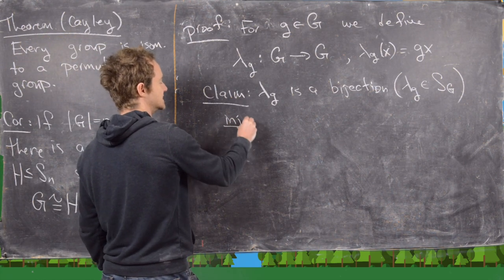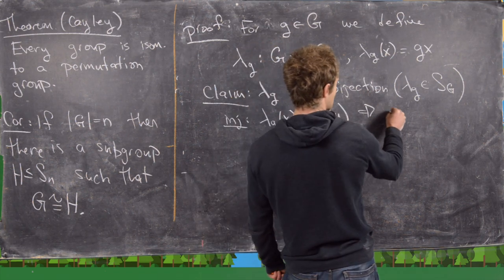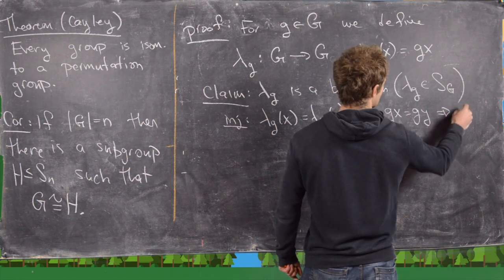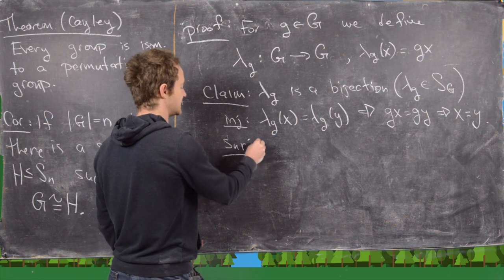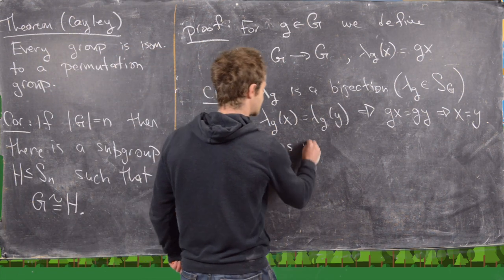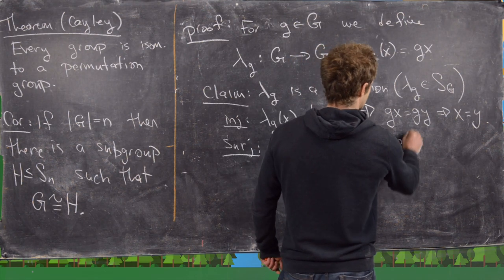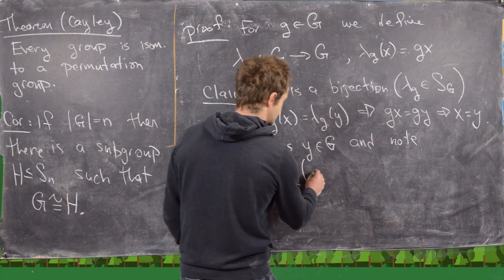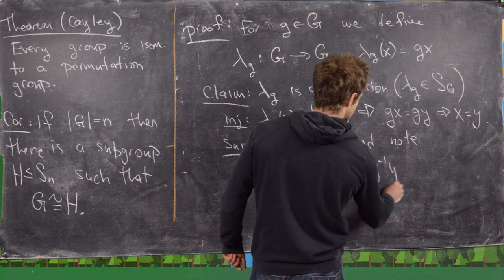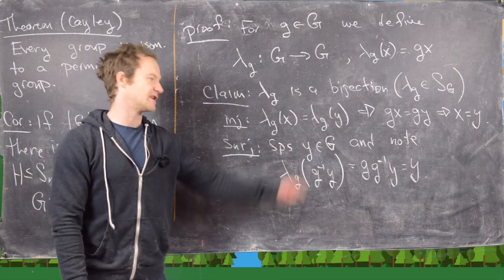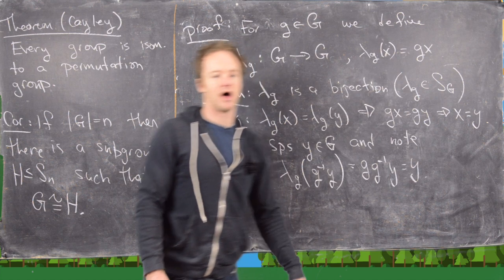We first need to show that λ_g is injective. Suppose that λ_g(x) equals λ_g(y). That tells us that g times x equals g times y, which tells us x equals y just by left cancellation within the group. Now let's show that λ_g is surjective. Suppose y is an element of the group; we want to find some pre-image for y. Notice that if we take λ_g and plug in g inverse times y, we get g times g inverse times y, which equals y. So we found a pre-image, and λ_g is a bijection — in other words, a permutation on the underlying set.